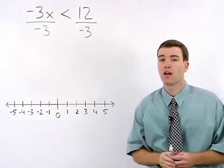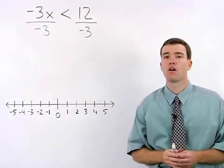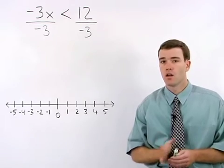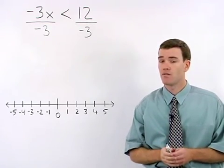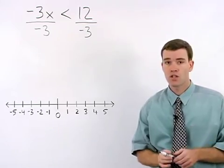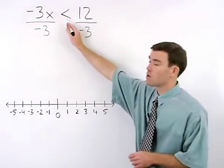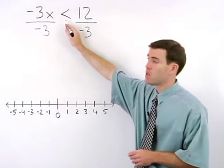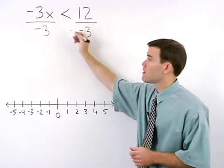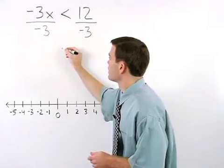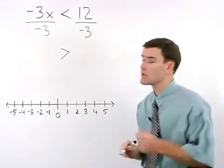But here's the rule you have to watch out for when solving inequalities. When you divide both sides of an inequality by a negative number, you must switch the direction of the inequality sign. So this less than in our original problem becomes greater than in our second step.